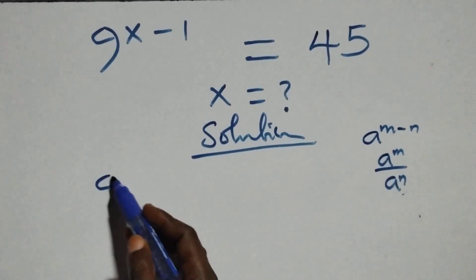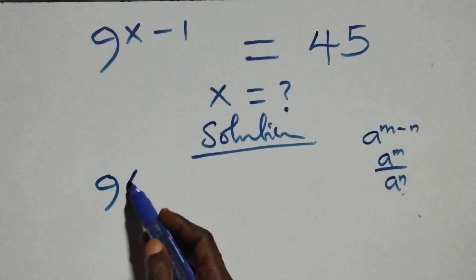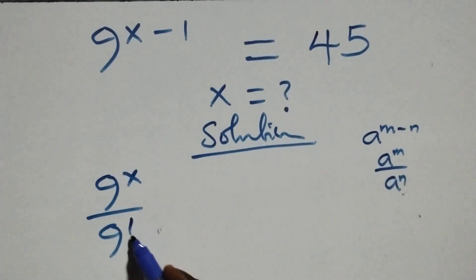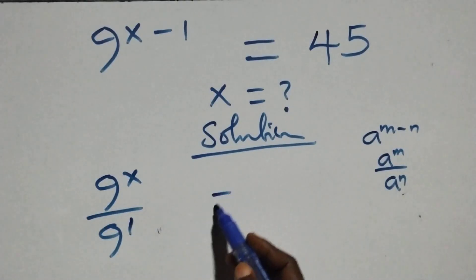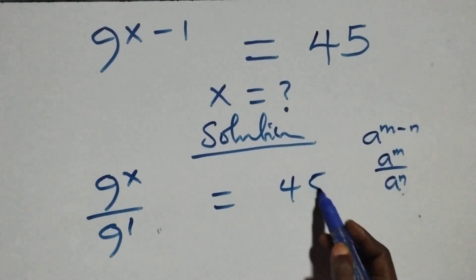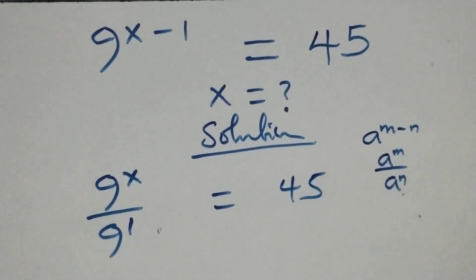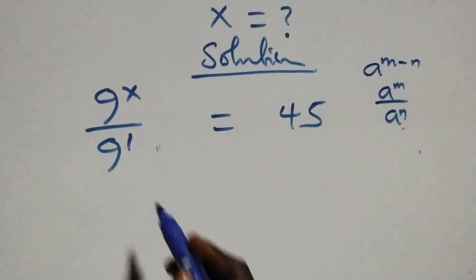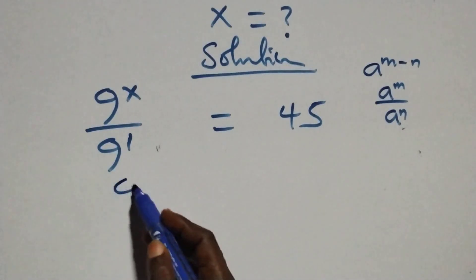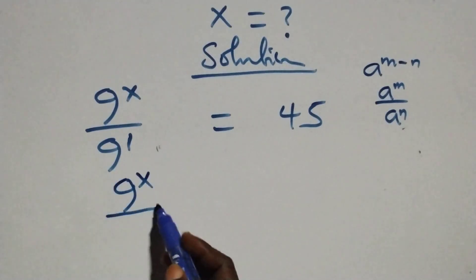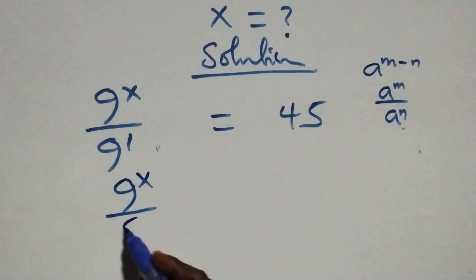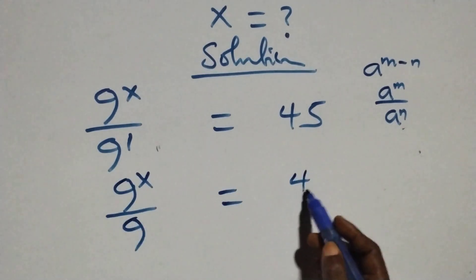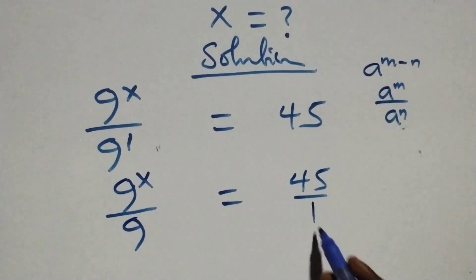Here we have 9 raised to power x over 9 raised to power 1 equals 45. This is the same thing as 9 raised to power x over 9, which we can write as 45 over 1.